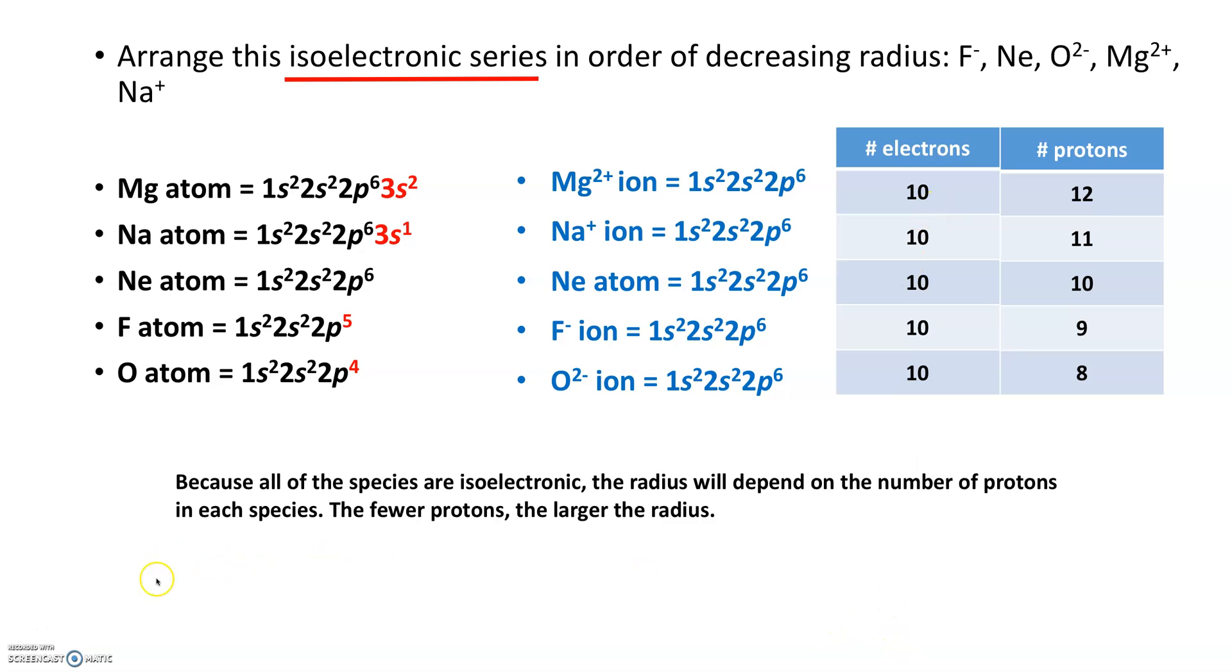The biggest species would go in the beginning. So what's that? The oxide ion. Why? Only 8 protons pulling on the 10 electrons.